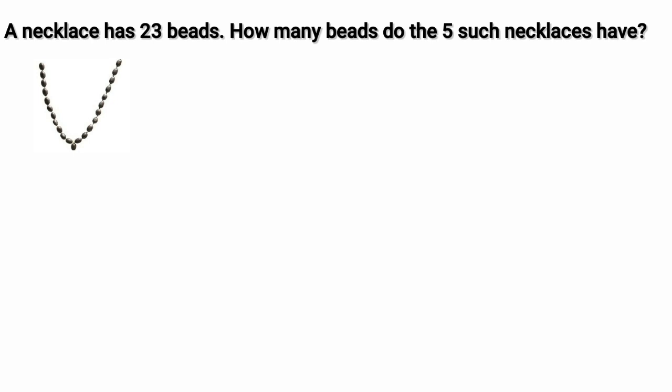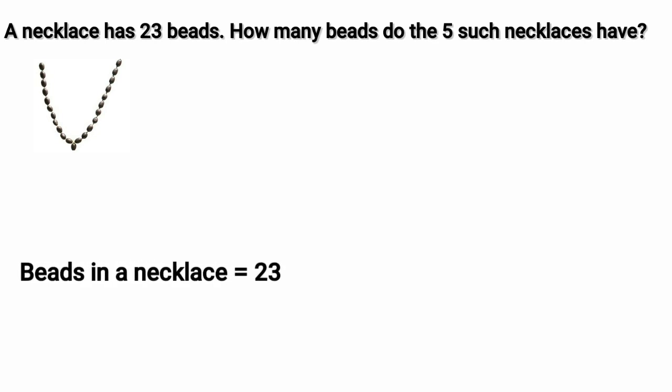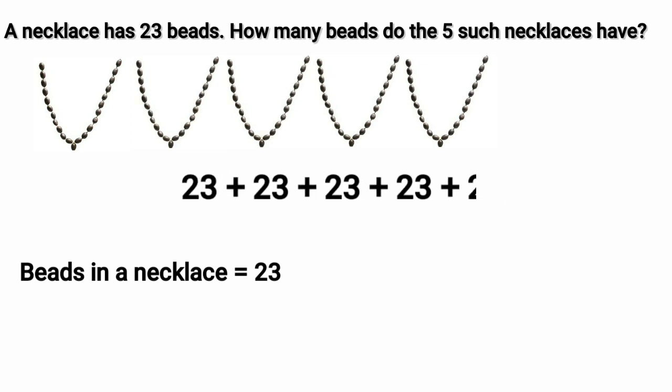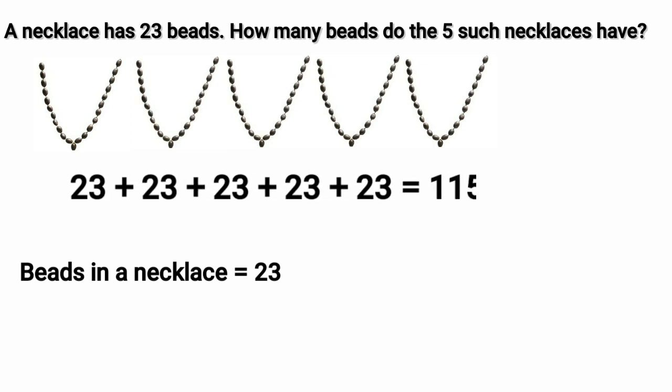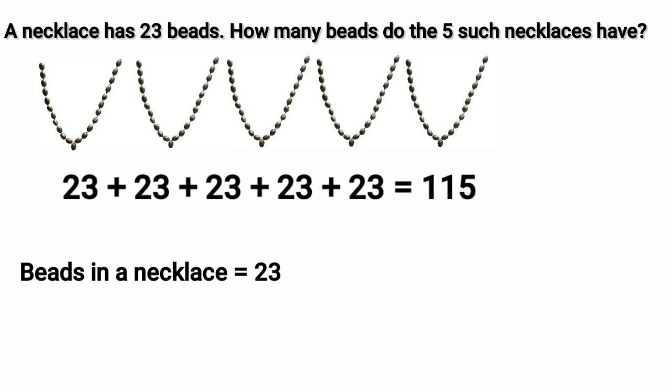A necklace has 23 beads. How many beads do such 5 necklaces have? Beads in a necklace is equal to 23. We have to find the beads in 5 such necklaces. We will add 23 five times to find the number of beads.